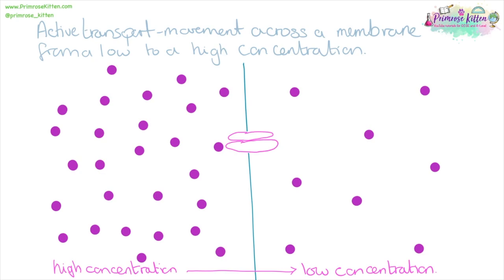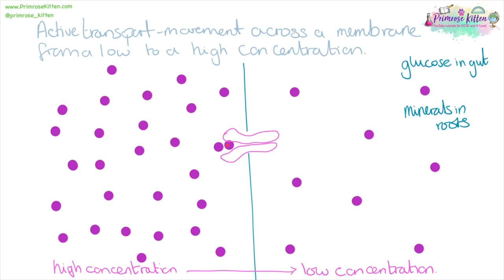Active transport is the movement across a membrane, but this time it's from a low concentration to a high concentration — against the concentration gradient. So our active transport channel is going to pick up something that it wants and then move that through the channel to the other side. This could happen, for example, when we're talking about glucose in the gut or minerals in roots.